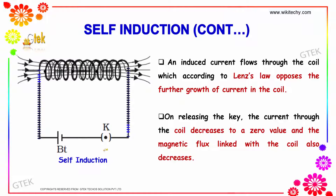On releasing the key K, the current through the coil decreases to zero and the magnetic flux linked with the coil also decreases.